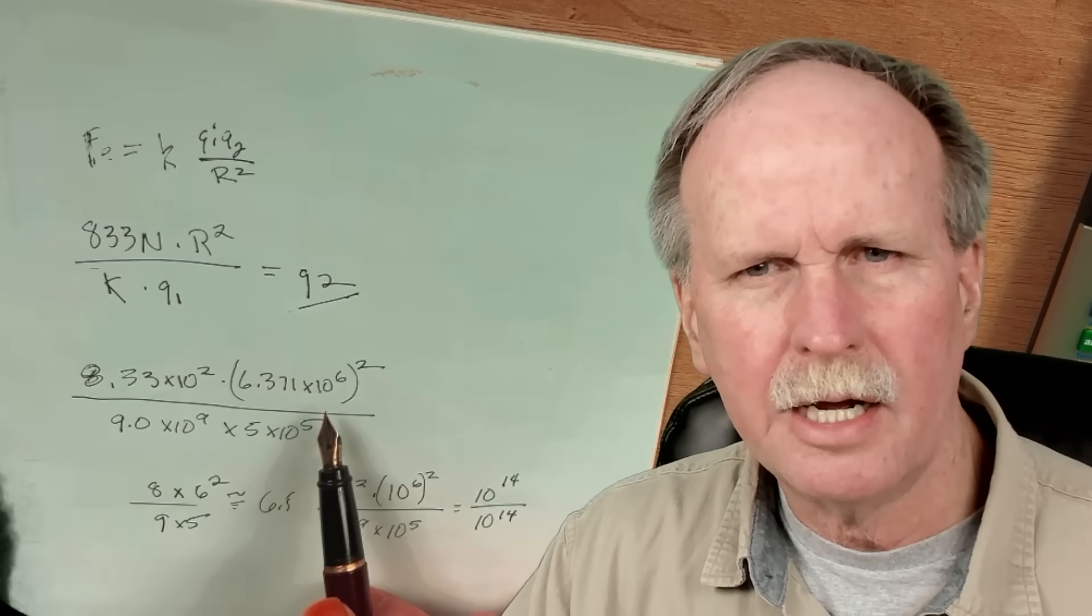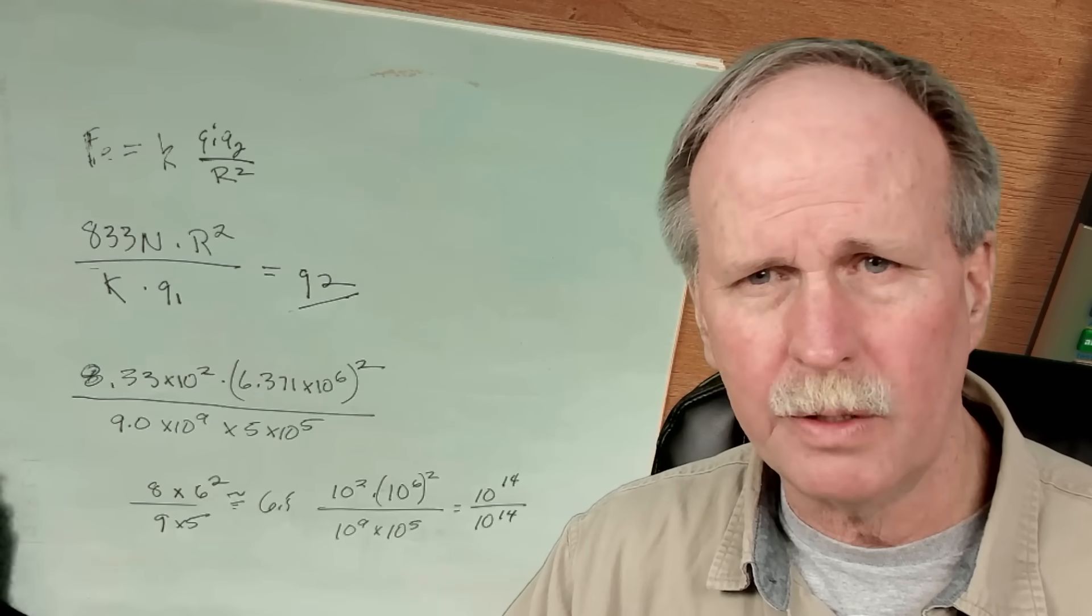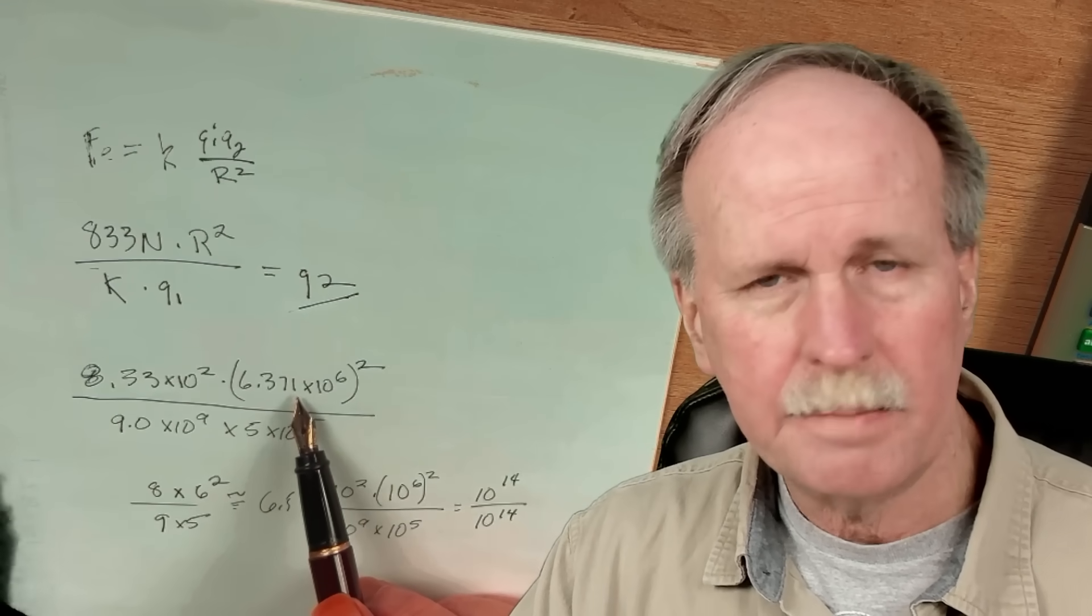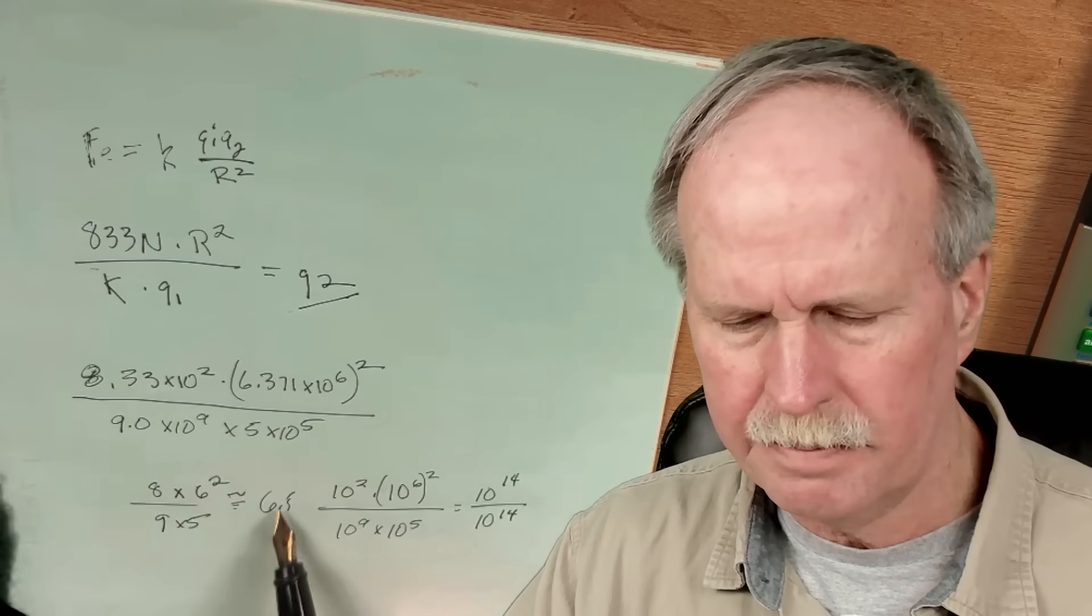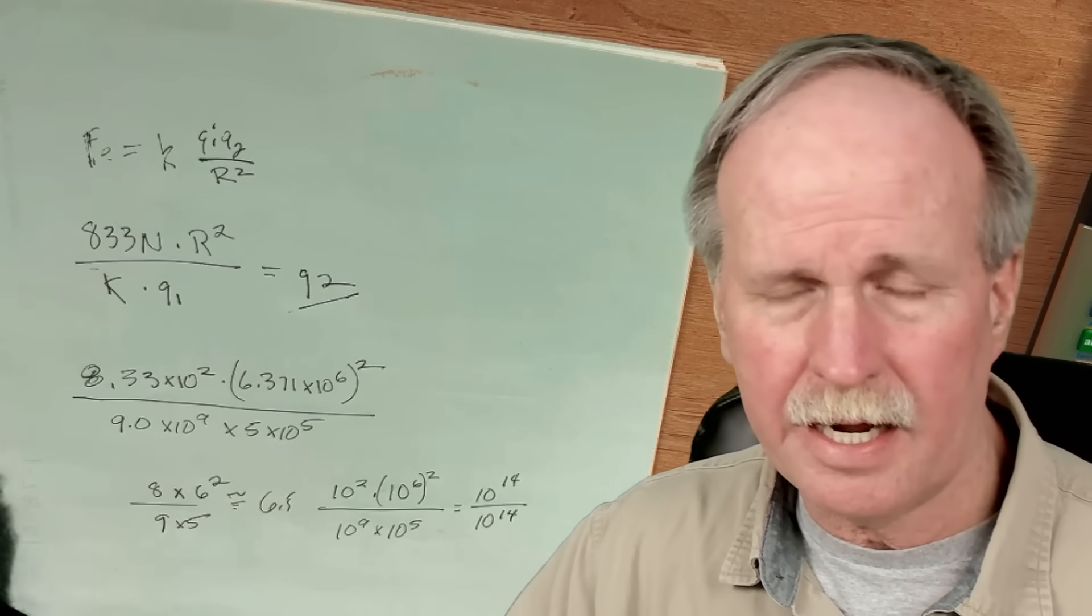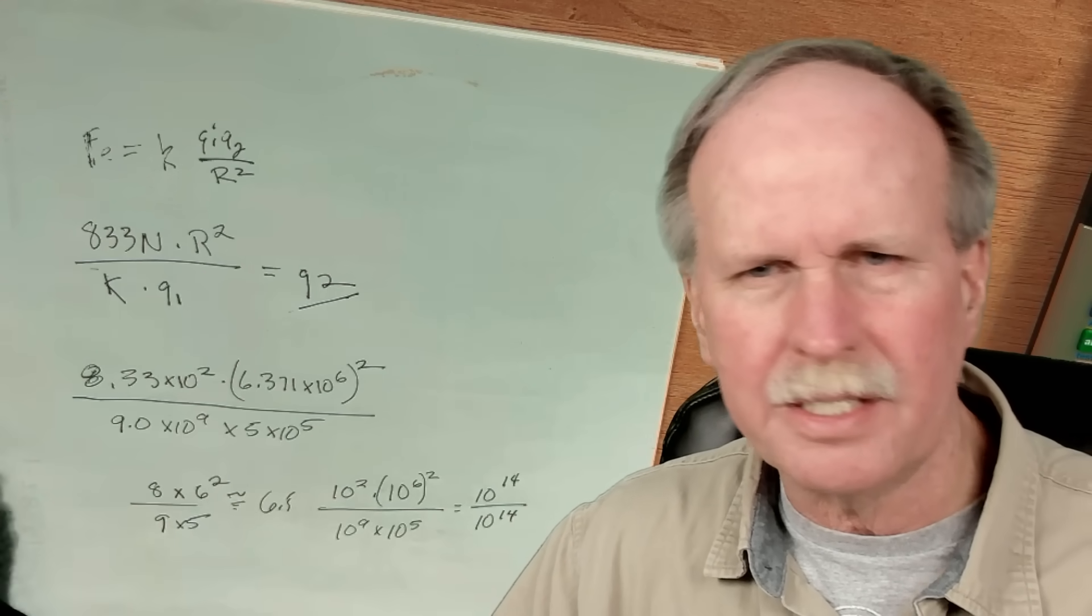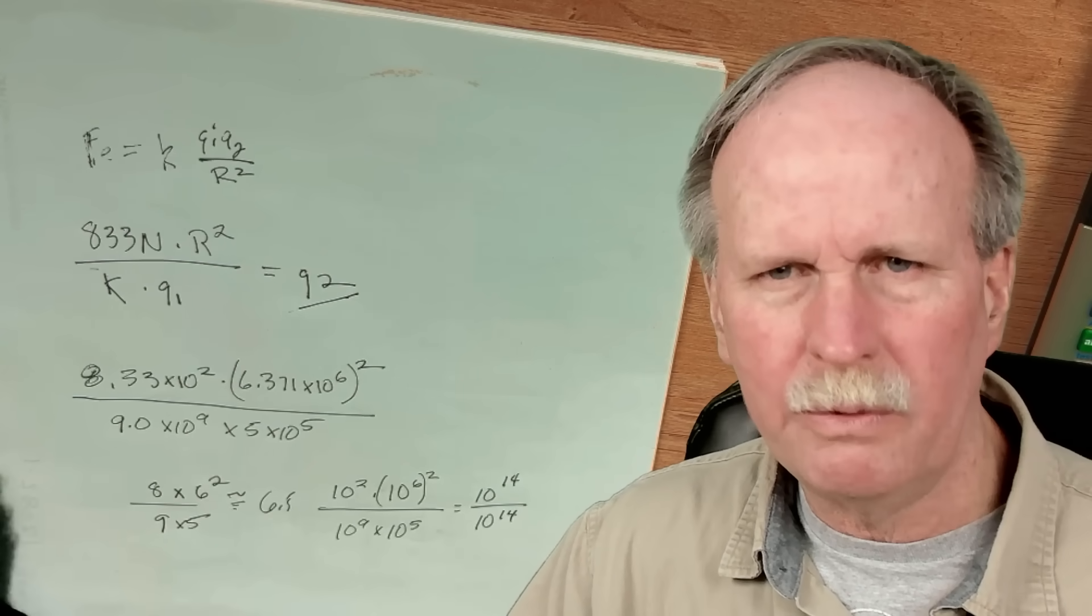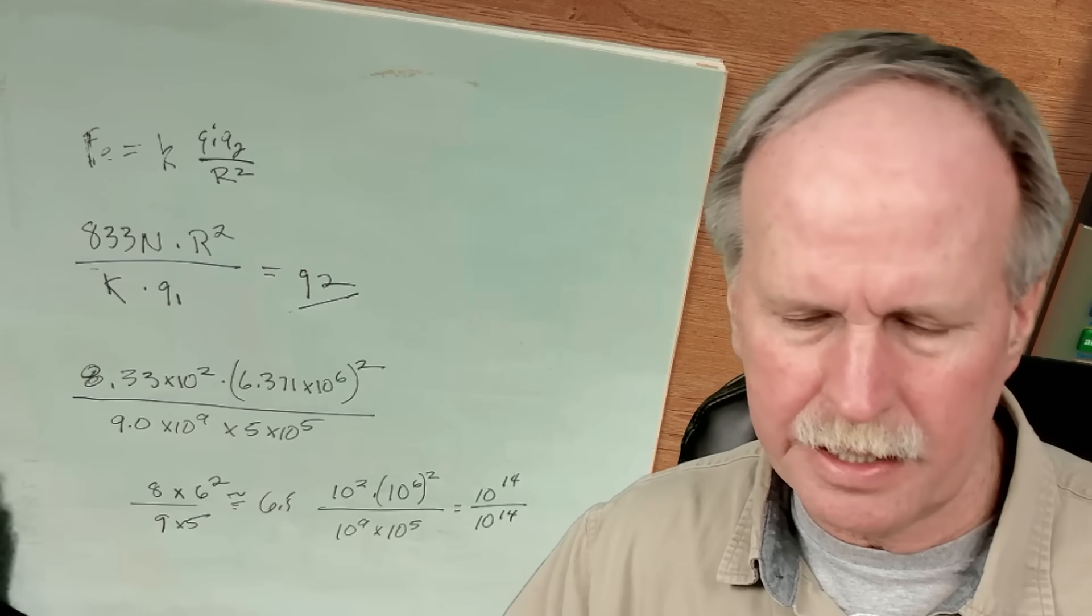So here are the numbers that we're talking about. Now, we can go ahead and do a quick estimate of this to see kind of where we're standing. If we look at this as 8 times 6 squared divided by 9 divided by 5, as I have here, it's going to come out to around 6.5. So we've kind of got an idea of the magnitude of this. It's not 14. It's not 0.3. So the range is going to be somewhere between 1 and 10. So it doesn't really bother us too much when we look at powers of 10 next door.